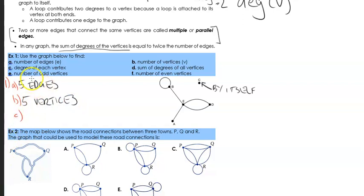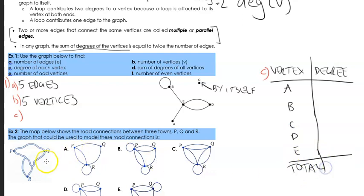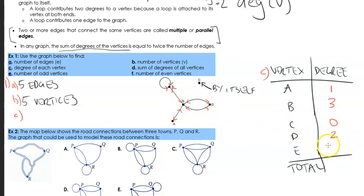For part C, the degree of each vertex. Let's set up a table with vertex and degree for A, B, C, D, and E. The degree of A: there's only one edge going to A, so degree is 1. For B: there's a loop which counts as two, plus another edge going into B, so degree is 3. For C: it's by itself, so degree is 0. For D: there are two edges, so degree is 2. For E: one, two, three, four — so degree is 4. The total is 1 + 3 + 0 + 2 + 4 = 10.